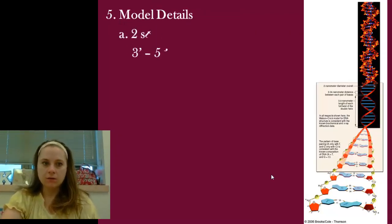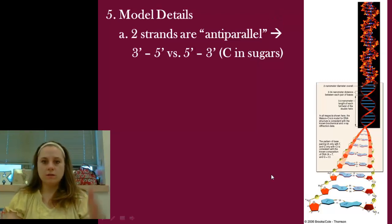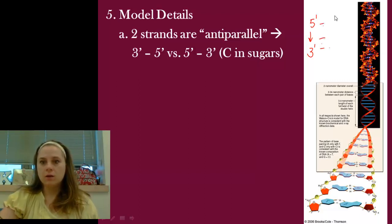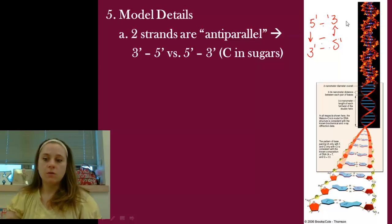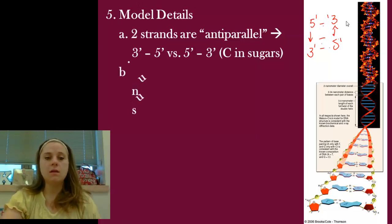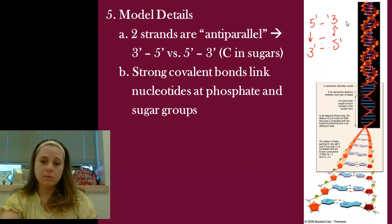A little detail about the Watson and Crick model: the strands are oriented in what we call anti-parallel. One side runs in the five-prime to three-prime direction, and that is hydrogen-bonded to the other side of the molecule, which runs in the three-prime to five-prime direction — so one side's right side up, the other side's upside down. Covalent bonds link nucleotides together on the sides of the ladder between the sugar and the phosphate, so you have alternating sugar-phosphates making up the sides while hydrogen bonds hold the bases together in the center.